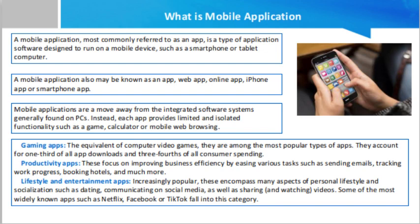Apps are divided into two broad categories: native apps and web apps. Native apps are built for a specific mobile operating system — usually iOS or Android. Native apps enjoy better performance and a more finely tuned user interface, and usually must pass a stricter development and quality assurance process before they are released.